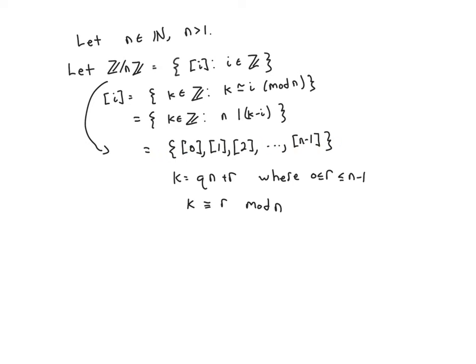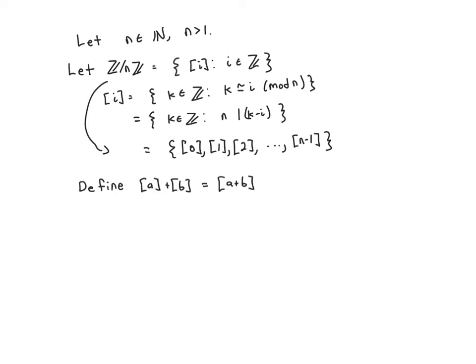Now I'm going to turn this set of integers modulo n into a group. Here's my definition: [a] plus [b], the sum of the equivalence classes, is just going to be the equivalence class of a plus b.